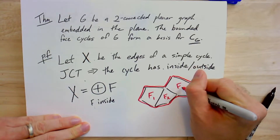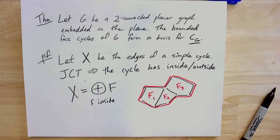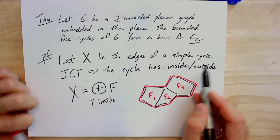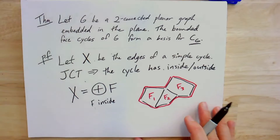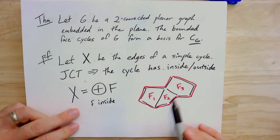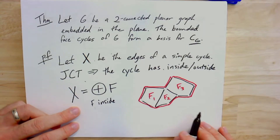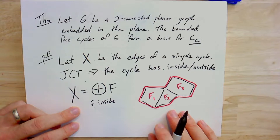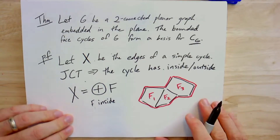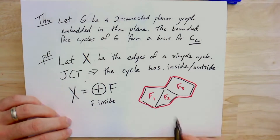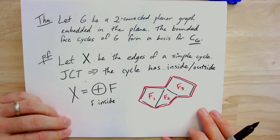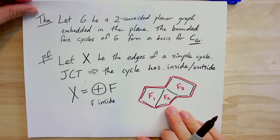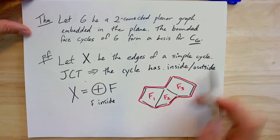You can write any simple cycle as the sum of the face edges inside it. Drawing a little picture: this cycle is necessarily the sum of these three smaller face cycles. Since every simple cycle can be written as a sum of faces, those faces span the entire cycle space. We can also see that any bounded face can't be written as a sum of other cycles, because adding them up eventually gets you to the boundary — and the outer face is not included in the basis. Euler's formula tells us exactly how many faces there are and how many vectors we expect in any basis for the cycle space.